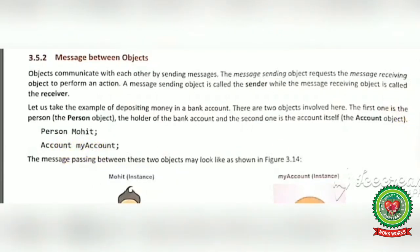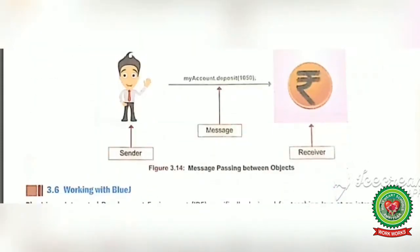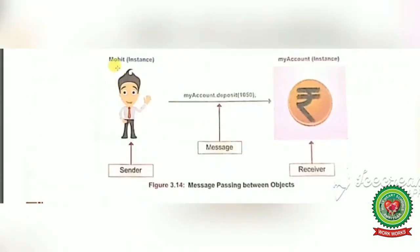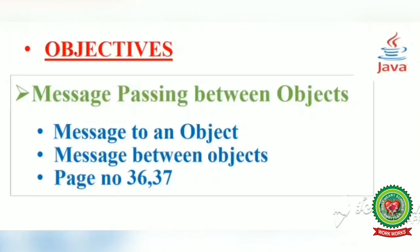See figure 3.14: Mohit is an object and myAccount is an object of account type. Mohit calls its account object to deposit money — 1050 — in the bank account. So one object sends the message to the other object, demonstrating the process of message passing between objects.